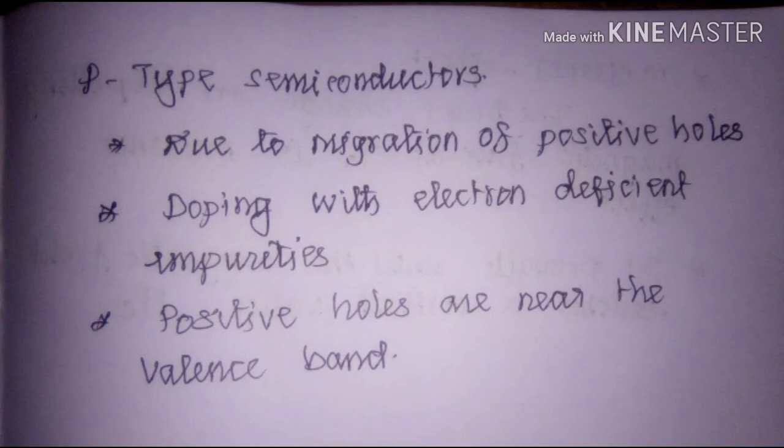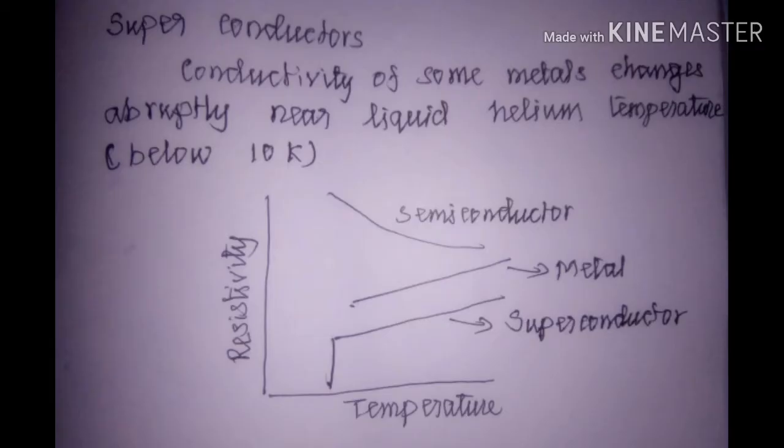P-type semiconductors are formed by doping with group 13 elements or electron-deficient impurities. These electron-deficient impurities create positive holes near the valence band. They accept electrons from the valence band, and so the positive holes make the semiconductor conductive.